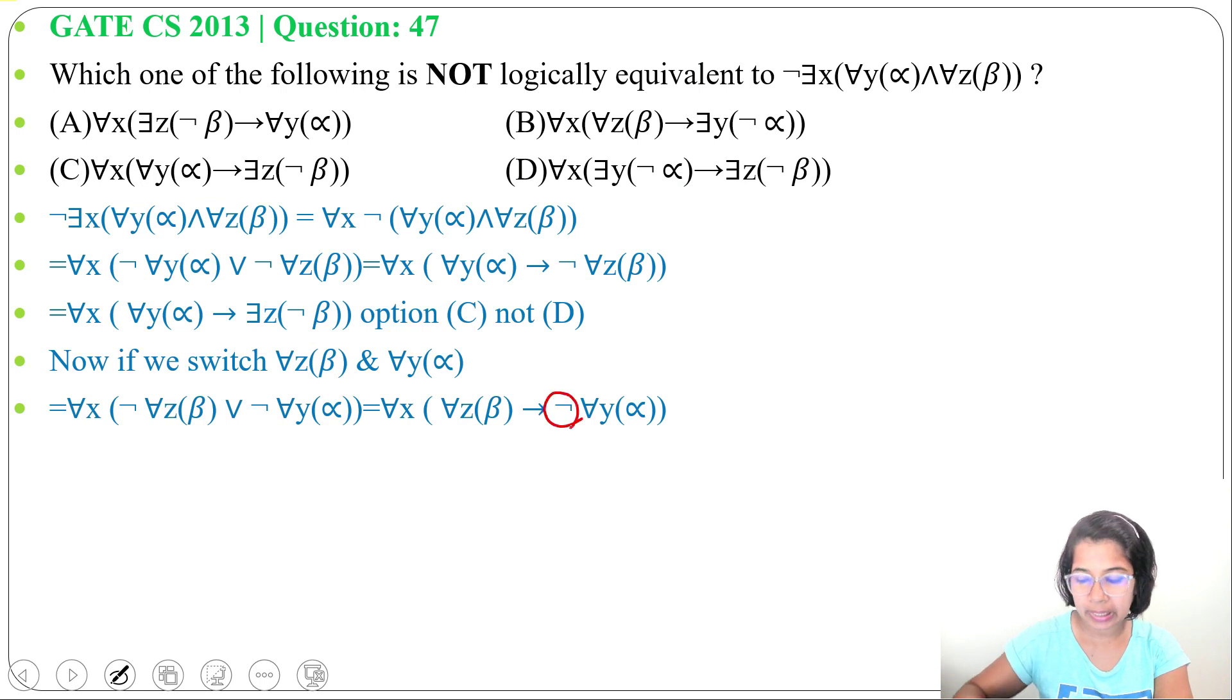Now we can take this negation inside. So this universal quantifier will change to existential. It will be for all X, for all Z, beta implies there exists Y negation of alpha.